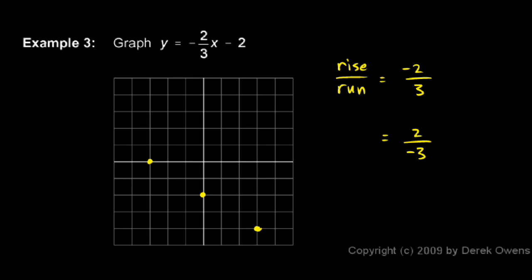And with those points, we can plot a line or draw in the line, and that's it. That is the line y equals negative two-thirds x minus 2.